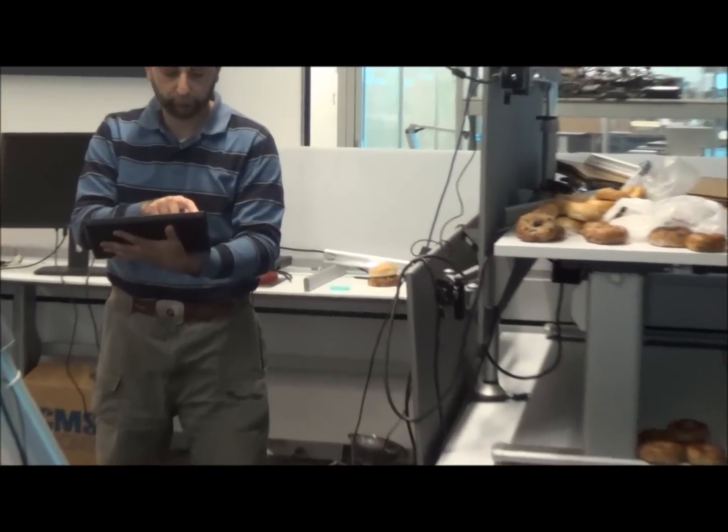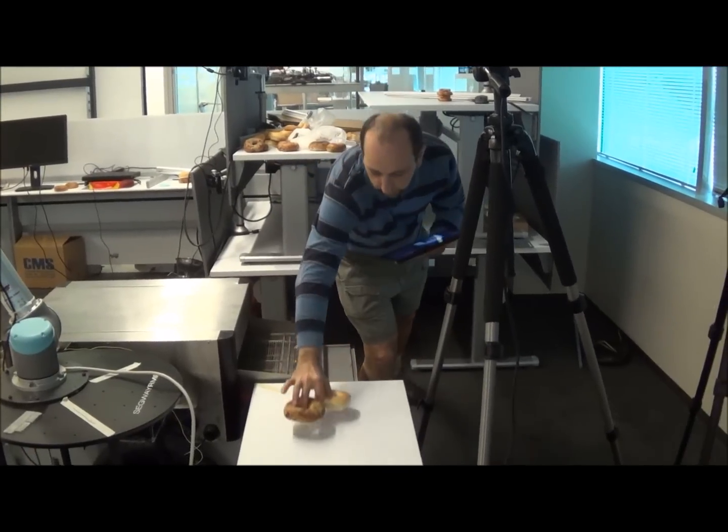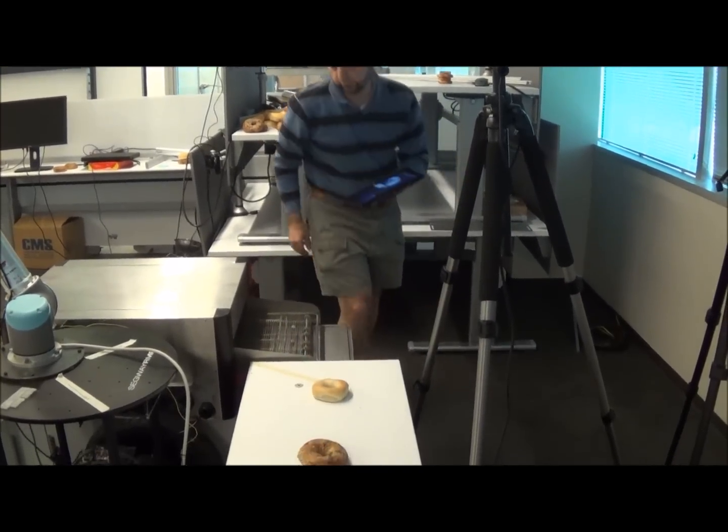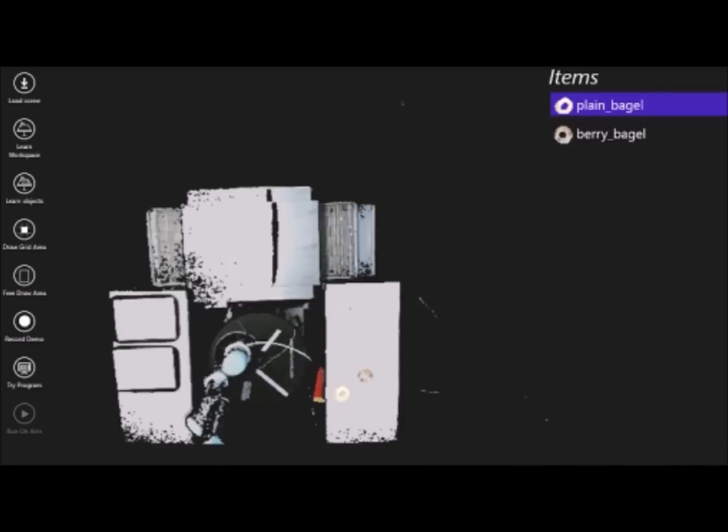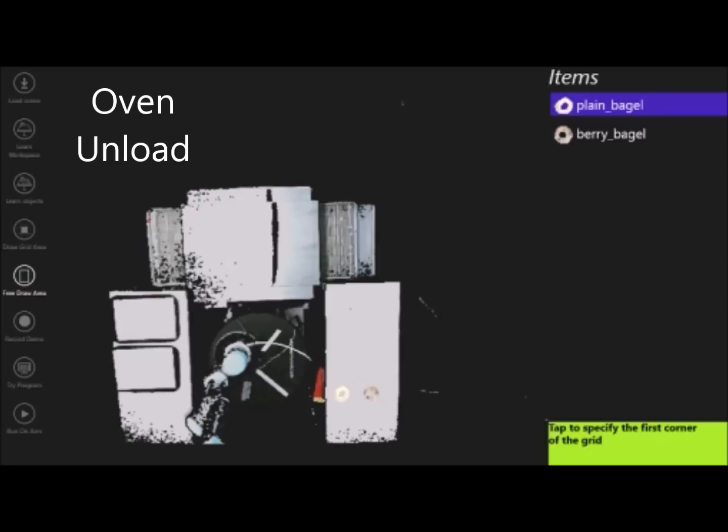The baker starts the demonstration by capturing an image of the physical workspace. The bagels are placed in the physical environment and a new image captured. This allows objects to be segmented using background subtraction as manipulable objects, which can be dragged in the virtual scene to demonstrate desired actions.